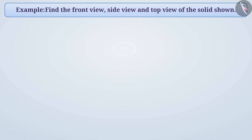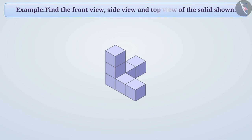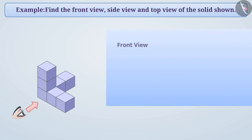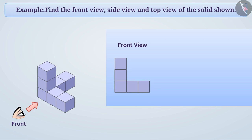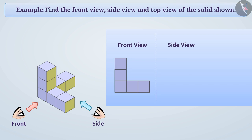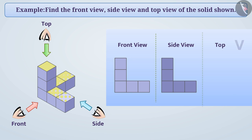Next example: find the front view, side view, and top view of the given solid. When we see a three-dimensional shape from the front, we get a front view — we can draw it accordingly. Looking from the side gives the side view, and looking from the top gives the top view. For this particular figure, all three views are similar.